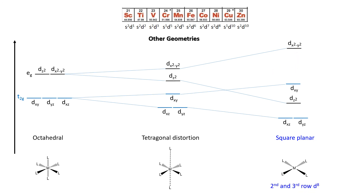This means that most d8 complexes in the second and third row are square planar. Second and third row metals are much more likely to have a large crystal field splitting (large Δoct), and d8 fills the four lower orbitals very nicely — six electrons in the t2g, then two more — giving excellent stabilization. So second and third row d8 complexes are much more likely to be square planar.